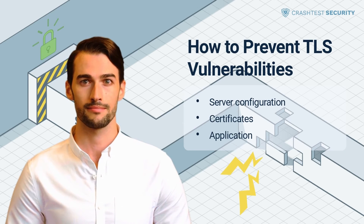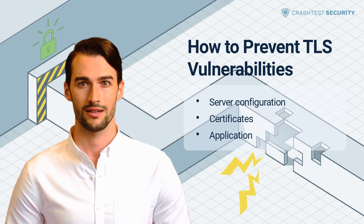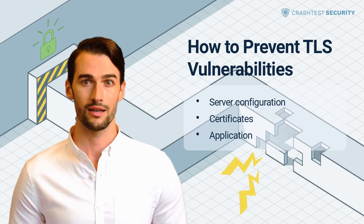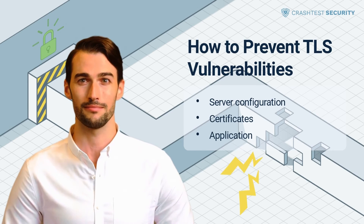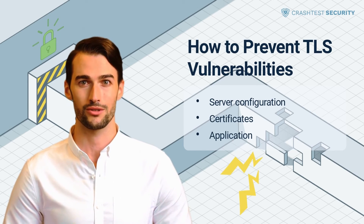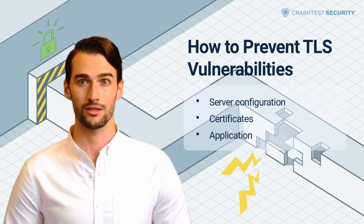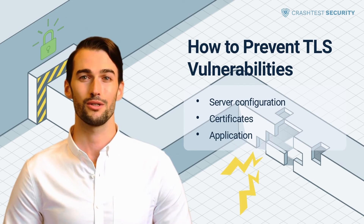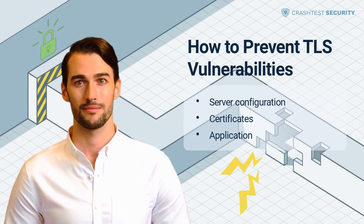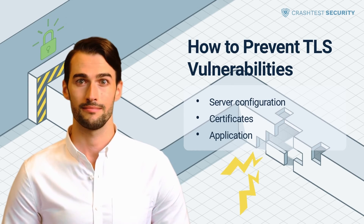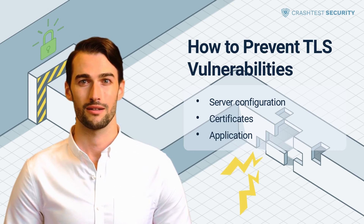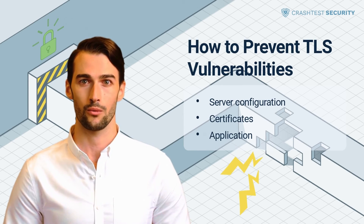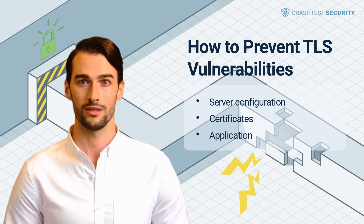Certificates: use a strong private key and protect it from unauthorized access via file system permissions and other controls. Use strong cryptographic hashing algorithms such as SHA-256. Ensure the domain name matches the fully qualified name of the server that presents the certificate. Reconsider the use of wildcard certificates due to the increased risk of a security compromise. Use a trusted and well-known certificate authority. Use Certification Authority Authorization DNS records to define the CAs that can issue certificates. Always provide intermediate certificates along with the main certificate.